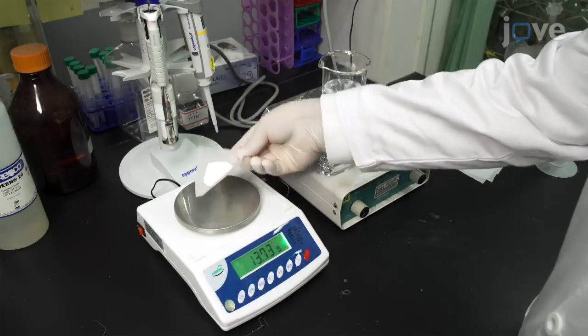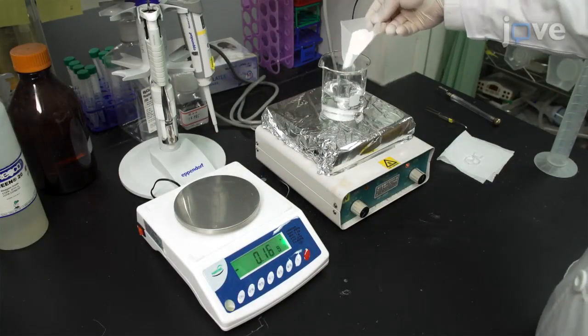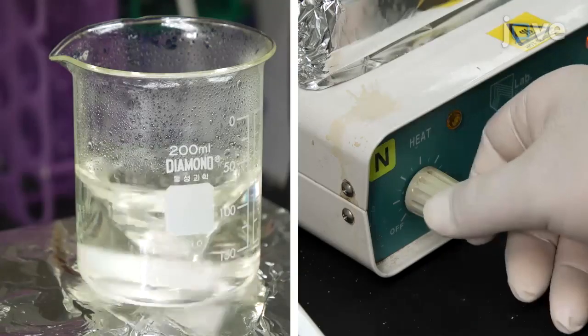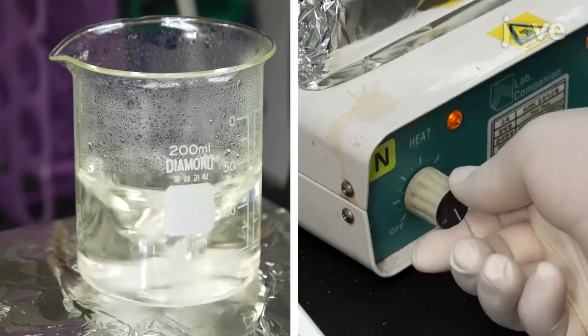Next, dissolve 3 grams of agarose in 100 milliliters of 3 molar potassium chloride and place it on a hot plate between 90 and 100 degrees Celsius.